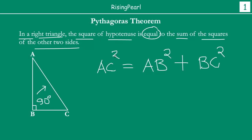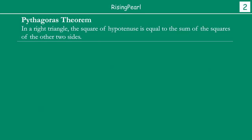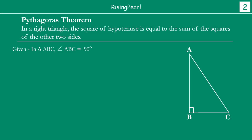So that is what Pythagoras Theorem is, and in today's presentation we are going to actually prove this. Let us first draw a right angle triangle. Here we have drawn a right angle triangle which is right-angled at B. So we have triangle ABC such that angle ABC is 90 degrees.